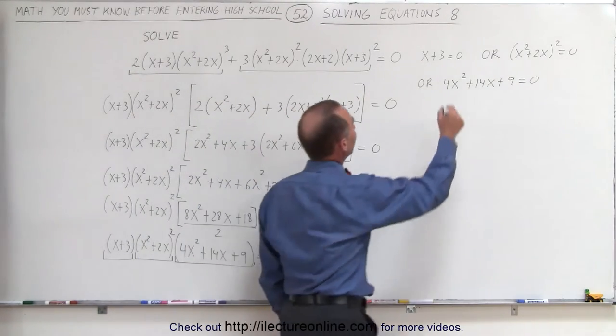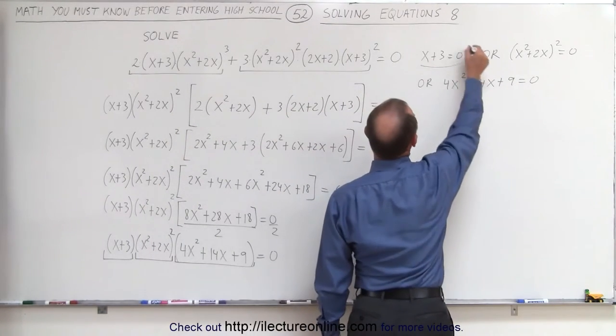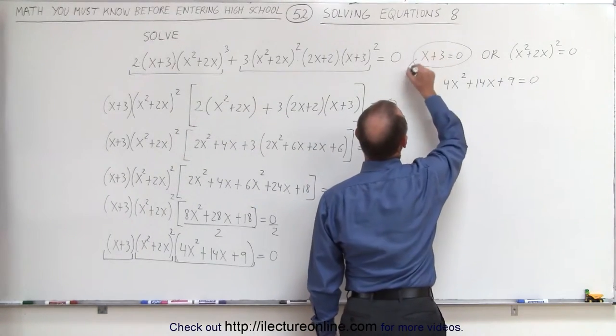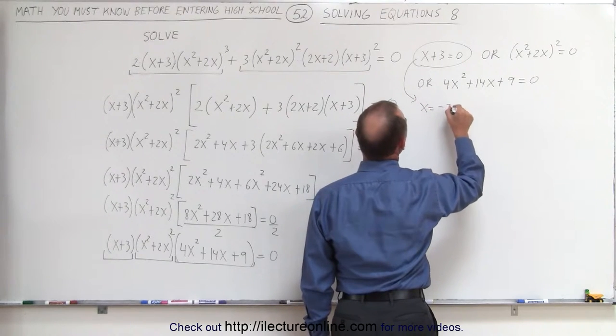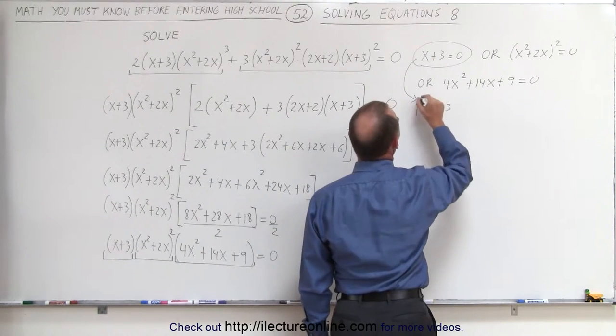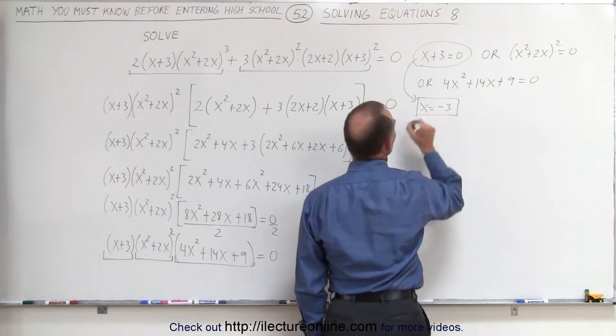We have to solve each of those separately. The first one is easy. If we take x plus 3 equals 0, that means that x equals negative 3 is one of our solutions.